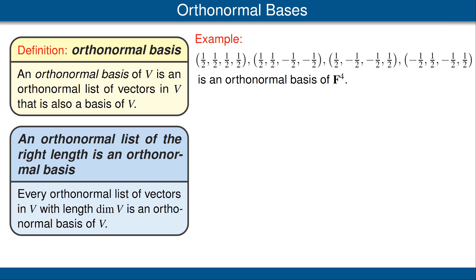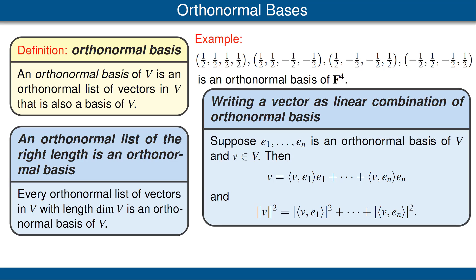Here's a list of four vectors in F^4. It's easy to verify this is an orthonormal list — please pause the video to verify that using the standard inner product on F^4. Because this orthonormal list has length 4, we can conclude it is an orthonormal basis of F^4. When we have a basis of a vector space, every vector can be written uniquely as a linear combination of basis vectors. However, finding those coefficients can be difficult. The wonderful feature of orthonormal bases is that there is a simple formula for the coefficients, which is shown here.